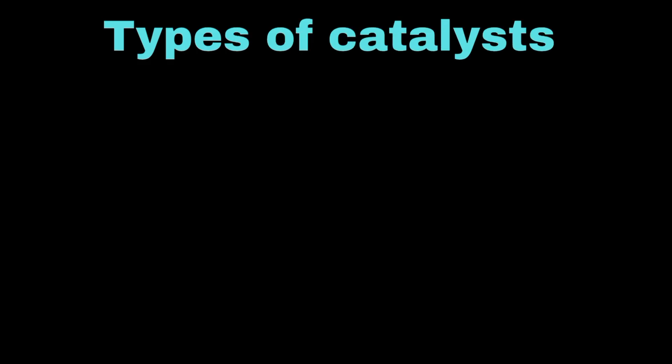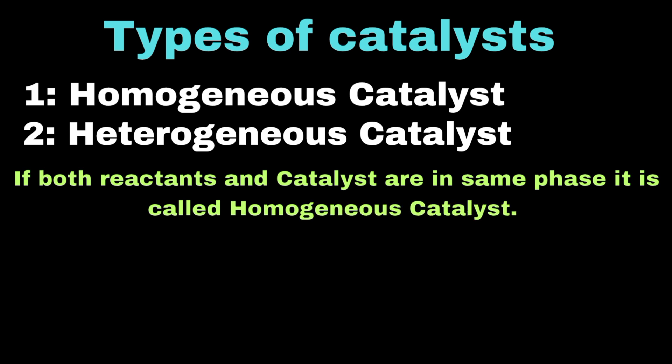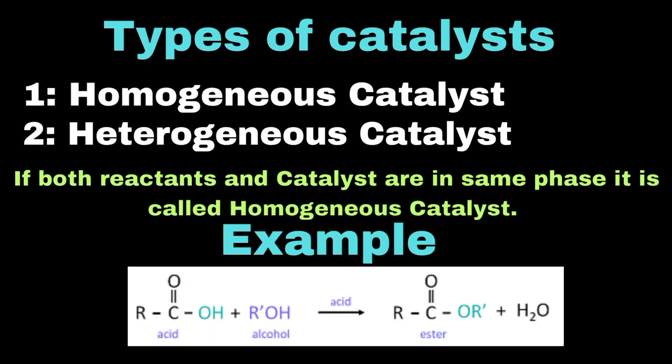There are two types of catalysts: homogeneous and heterogeneous. In homogeneous catalysis, both the reactants and the catalyst are in the same phase. A common example is sulfuric acid in the esterification reaction, where it speeds up the reaction between an alcohol and a carboxylic acid to form an ester and water, while remaining in the same liquid phase as the reactants.